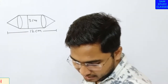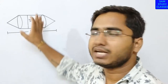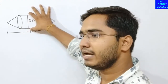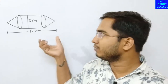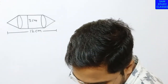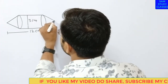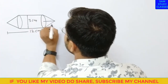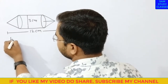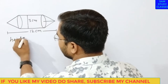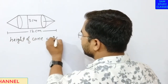This whole model is 12 cm in total height. Its diameter is 3 cm. One more point is given: the height of the cone is 2 cm. So, write: height of cone is equal to 2 cm.